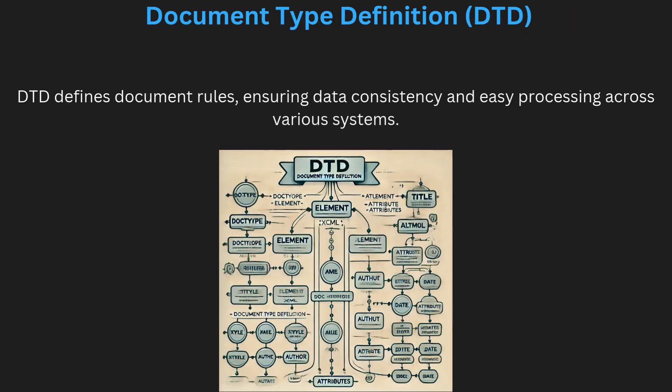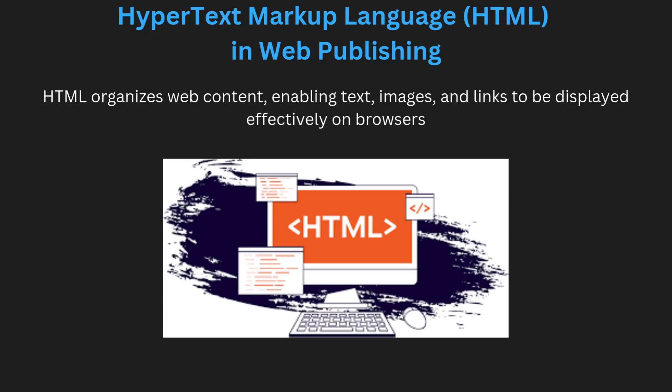The Document Type Definition (DTD) provides a framework for defining document structure in markup languages like SGML and XML. DTD outlines the rules and structure that documents must follow, ensuring consistency in how data is organized. For instance, DTD specifies which tags are allowed and how they relate to each other, making it easier for software to process documents correctly. In content management, the DTD is essential as it standardizes document structure, supporting reliable data exchange and proper display across systems.